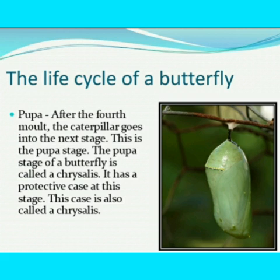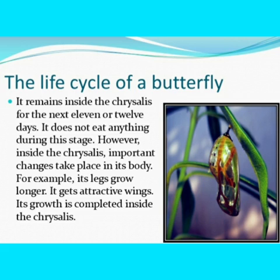After the fourth molt, the caterpillar goes into the next stage — the pupa stage. The pupa stage of a butterfly is called a chrysalis. It has a protective case at this stage, also called a chrysalis. It remains inside the chrysalis for the next 11 or 12 days. It does not eat anything during this stage. However, inside the chrysalis, important changes take place in its body. For example, its legs grow longer and it gets attractive wings. Its growth is completed inside the chrysalis.